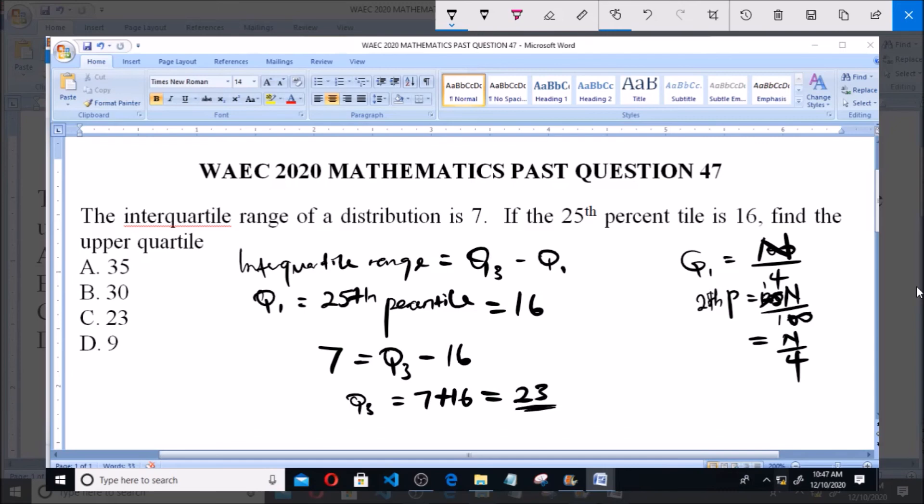So the upper quartile is 23, and that is option C. Thank you. Please subscribe to the channel for more videos and past questions.